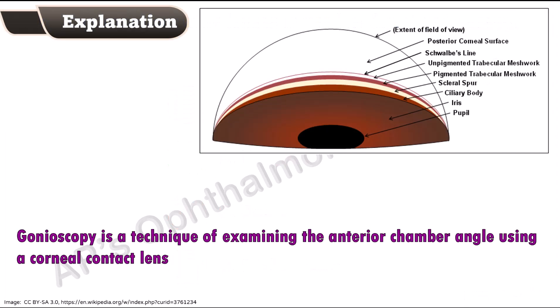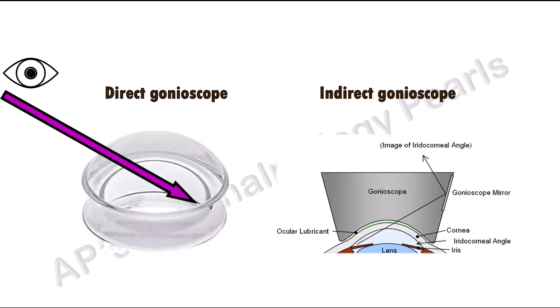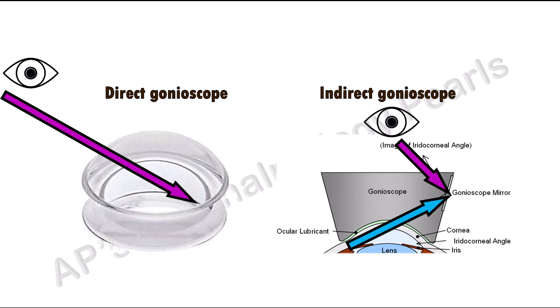Gonioscopy is a technique of examining the anterior chamber angle using a corneal contact lens. In direct gonioscopy, the angle is directly visualized, whereas in indirect gonioscopy, an image of the angle is visualized in a mirror.